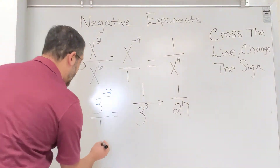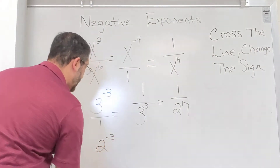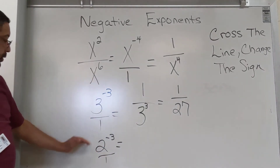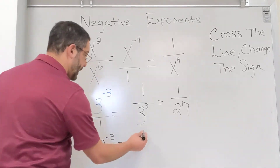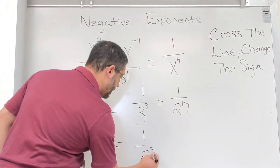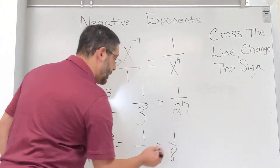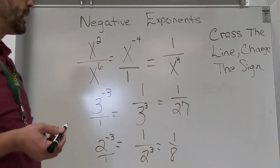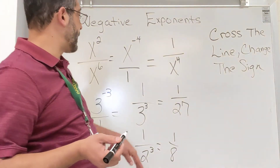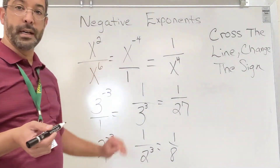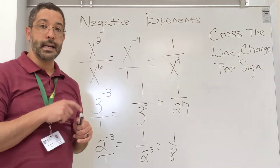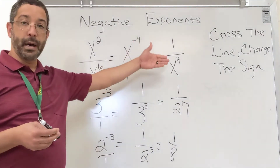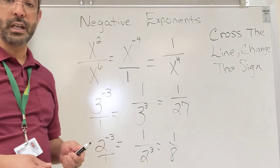If I had 2 to the negative third, I do the same thing. I think of it as a fraction, cross the line and change the sign, and write it as one over 2 to the third, which gives me one over 8, because 2 × 2 = 4 and 4 × 2 = 8. So that's how I go from a negative exponent to a positive exponent. From now on, any time you have an answer that is a negative exponent, write it as a positive exponent by crossing the line and changing the sign.